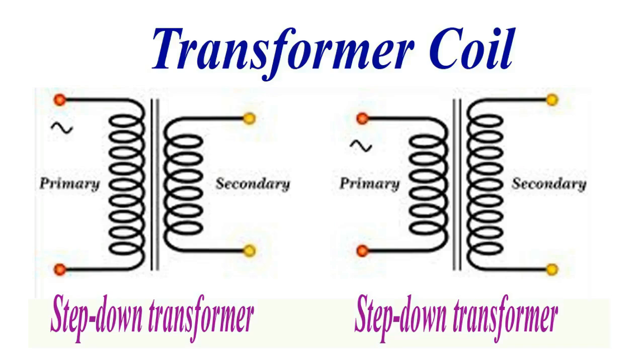A step-up transformer has more turns in the secondary winding, increasing the voltage and decreasing the current. A step-down transformer has fewer turns in the secondary winding, decreasing the voltage and increasing the current.